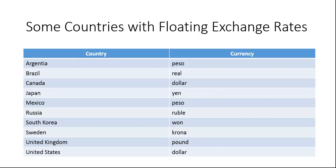Here are a few countries that use a floating exchange rate system: Argentina with the peso, Brazil with the real, Russia with the ruble, Sweden with the krona, the United Kingdom with the pound, and the United States with the dollar.